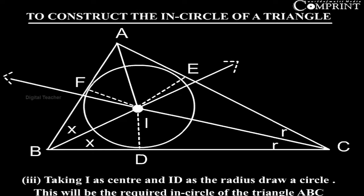Taking I as center and ID as the radius, draw a circle. This will be the required in-circle of the triangle ABC.